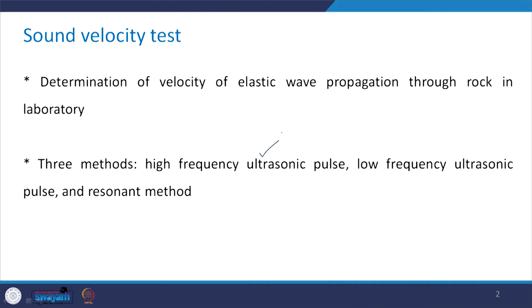The basic philosophy of this test is that a wave is propagated through the specimen of rock and the velocity of elastic wave propagation through the rock is determined in the lab. There are 3 methods to conduct this sound velocity test: high frequency ultrasonic pulse test, low frequency ultrasonic pulse test, and the resonant method.